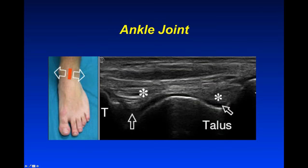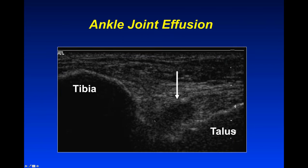For the ankle joint, we place the probe anteriorly and translate it back and forth, looking for the tibia and talus. It's important not to confuse the hypoechoic line of the articular cartilage on the dome of the talus for fluid — cartilage hugging the bone is normal. When you have an effusion it forms a teardrop shape. This patient had acute ankle trauma with a bloody effusion into the tibiotalar joint, forming that teardrop shape.